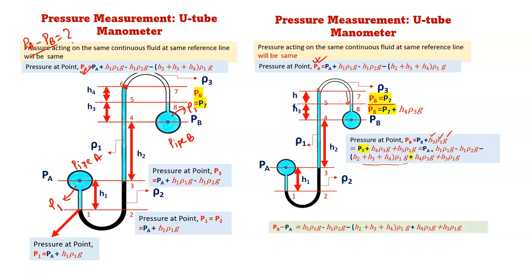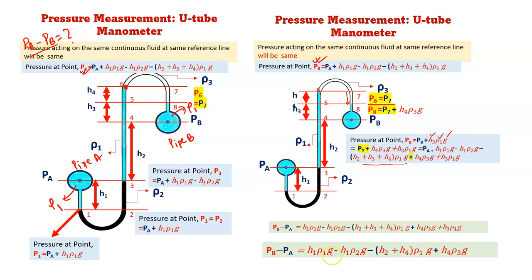Now, finally, if we do the reorganization, P_B minus P_A equals H_1·ρ_1·G minus H_1·ρ_2·G minus (H_2 + H_4)·ρ_1·G plus H_4·ρ_3·G. If we reorganize, we will get this final formula. That's it. Thank you.